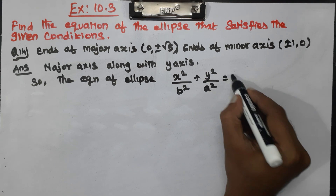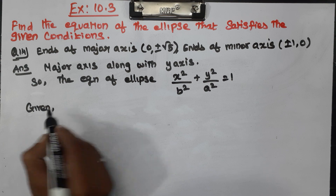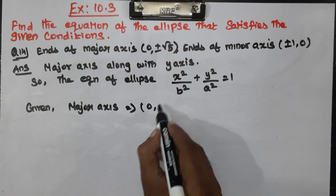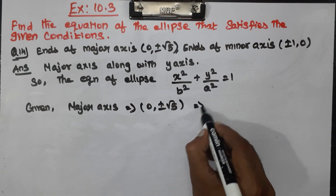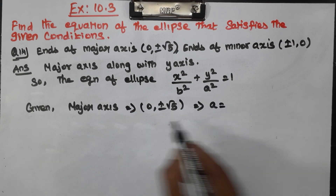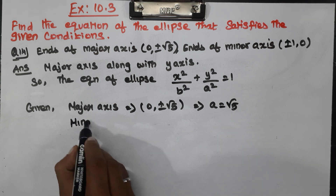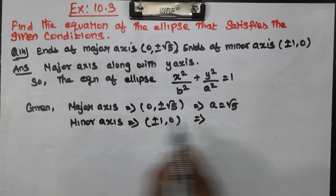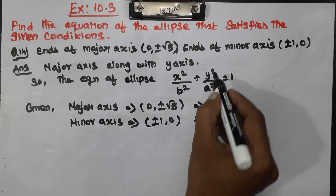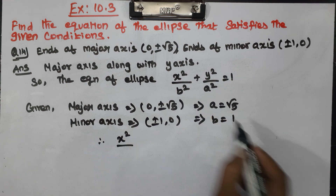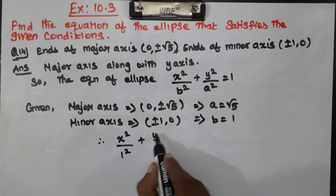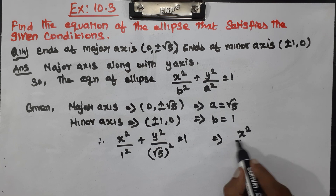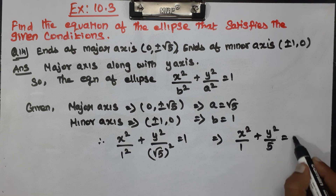Given: the major axis is at 0, plus or minus root 5, so a equals root 5. The minor axis is at plus or minus 1, 0, so b equals 1. Therefore, the equation is: x squared by b squared, which is 1, plus y squared by a squared, which is root 5 squared, equals 1. This gives x squared by 1 plus y squared by 5 equals 1.